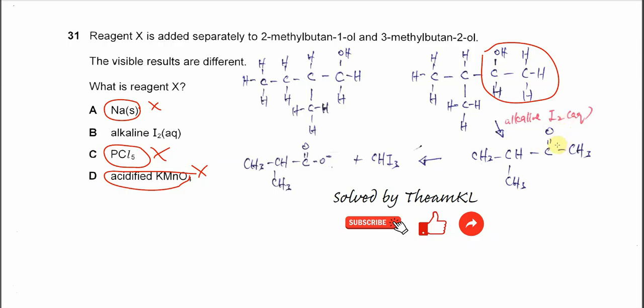The methyl ketones will further react with the alkaline iodine solution to form iodoform, CHI3, and these carboxylates. So that's why the answer is B.